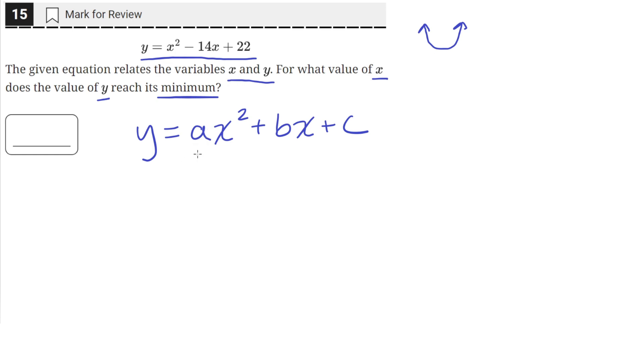then we can use the formula x equals negative b over 2a to find the x coordinate of the vertex of a quadratic.